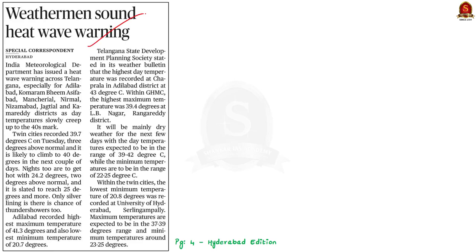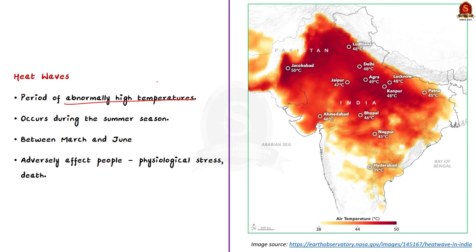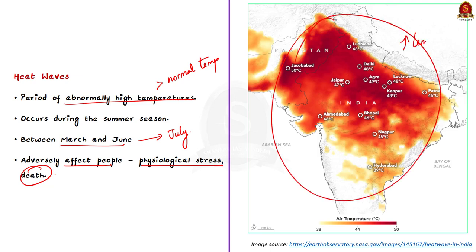The final article is with reference to heat waves. The article states that the Indian Meteorological Department has issued a heat wave warning across Telangana, as day temperatures slowly rose up to 40 degrees Celsius. A heat wave is a period of abnormally high temperatures — heat waves have more than the normal maximum temperature that occurs during the summer season. Heat waves typically occur between March and June, and in some rare cases even extend till July. The extreme temperatures and resultant atmospheric conditions adversely affect people, causing physiological stresses sometimes resulting in death.